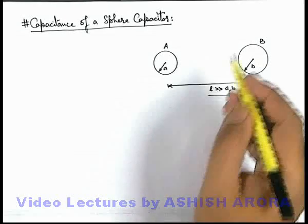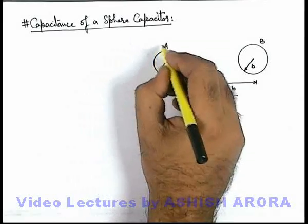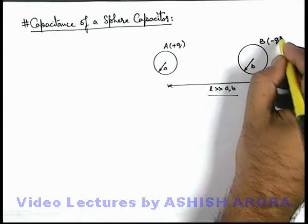We'll transfer a charge q from sphere B to sphere A. In that case, A will receive a charge +q and B will receive a charge -q.